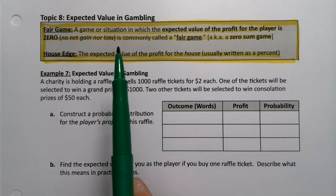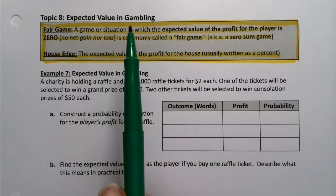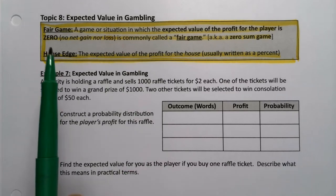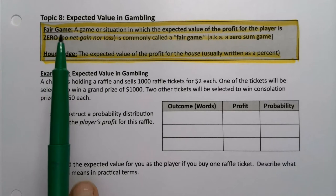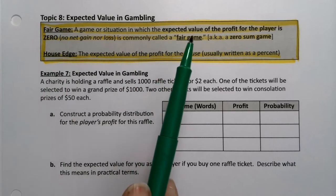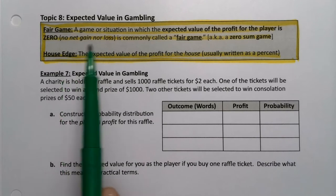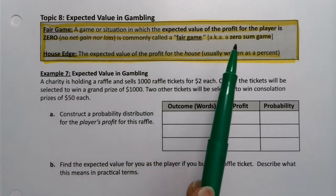As mentioned briefly in an earlier video, we want to talk about expected value for gambling. There are two very important concepts here which I've highlighted. One is that a game is fair if its expected value for the profit for the player or the house is zero. That's called a fair game or a zero-sum game.